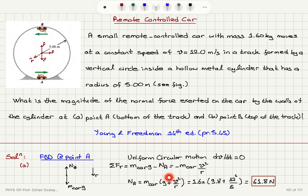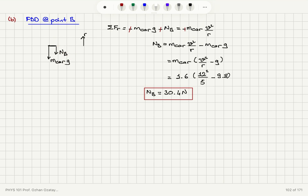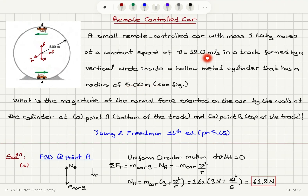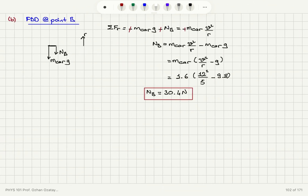Plugging in v equals 12 meters per second, R equals 5 meters, and mass equals 1.6 kilograms, we obtain 61.8 Newtons at point A. At point B, the normal force also points toward the center, and mass times g also points toward the center. Therefore the net radial force is mass times g plus the normal force equals mv-squared over R. Isolating the normal force at B and plugging in the numbers gives 30.4 Newtons, to three significant figures, which is the minimum number of significant figures reported in the problem statement.